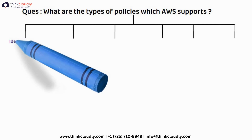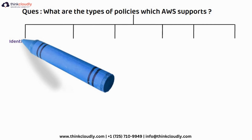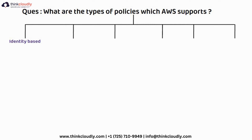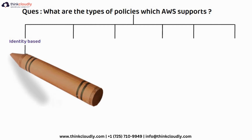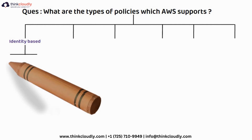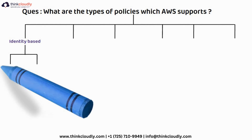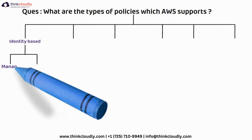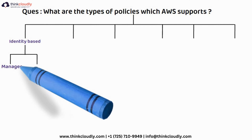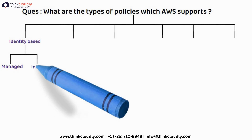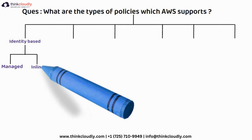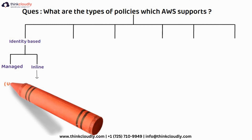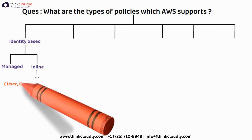Number one is identity-based policy. Identity-based policies are generally divided into two types: either it is a managed policy, meaning it is managed by AWS, or it is an inline policy, meaning it is specifically created for a user or a group.